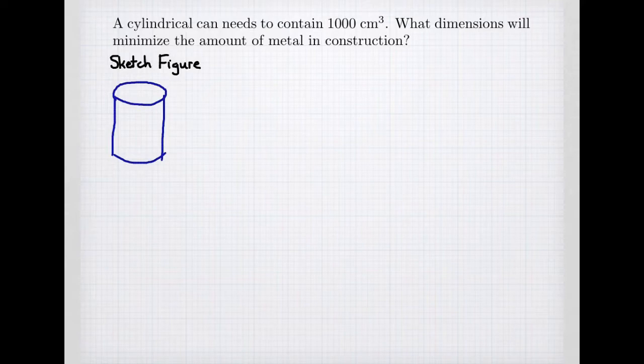This is an example of an optimization problem. We're given the information that a cylindrical can needs to contain 1,000 cubic centimeters, so that's one liter. What dimensions will minimize the amount of metal in construction?